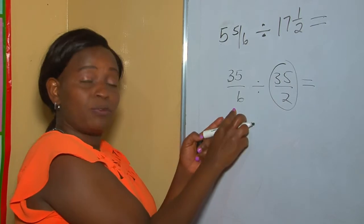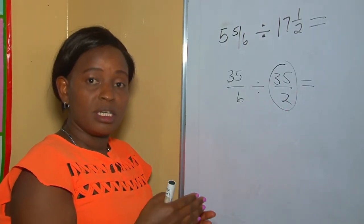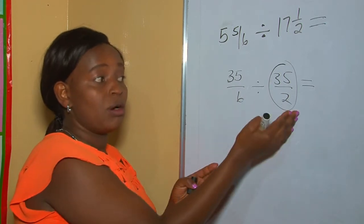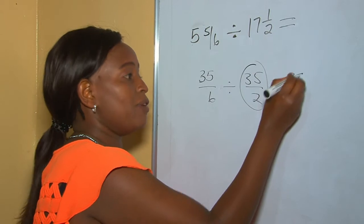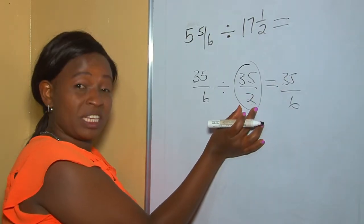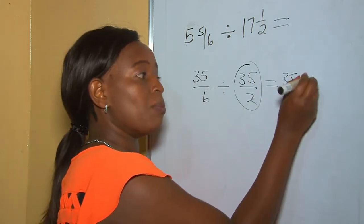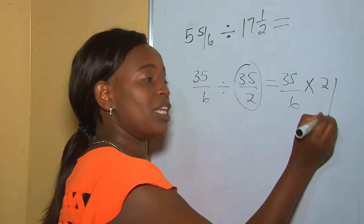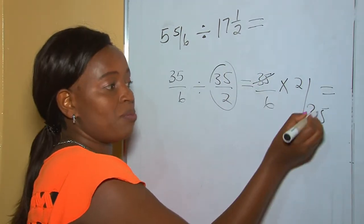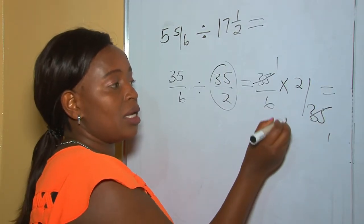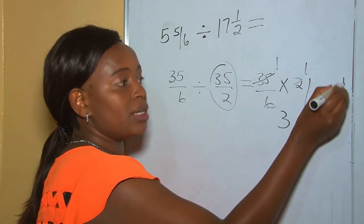The next step: this is our first fraction and this is our second fraction. We get the reciprocal of the second fraction, which is 2 over 35. The division changes into multiplication: 35 over 6 multiplied by the reciprocal, which is 2 over 35. We cross-cancel 35 by 35, giving 1 by 1, and 2 by 2, giving 1. So 1 times 1 is 1, and 3 times 1 is 3. The answer is one-third.